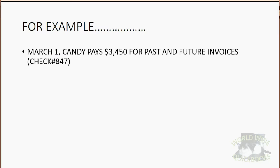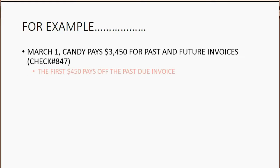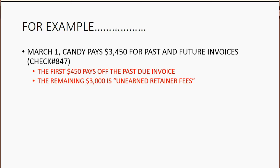For example, let's imagine on March 1, Candy pays $3,450 for both past and future invoices, and she pays us with check number 847. Obviously, the first $450 pays off the past due invoice, because that's her remaining balance. The remaining $3,000 is unearned retainer fees that Ross will earn from Candy in the future.